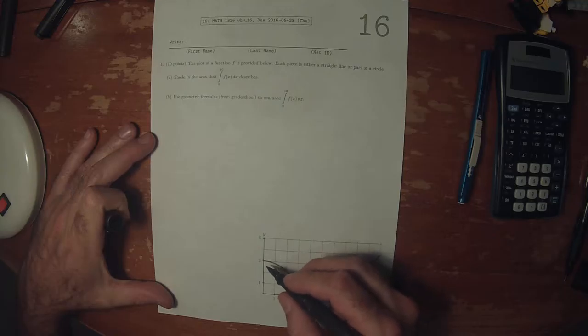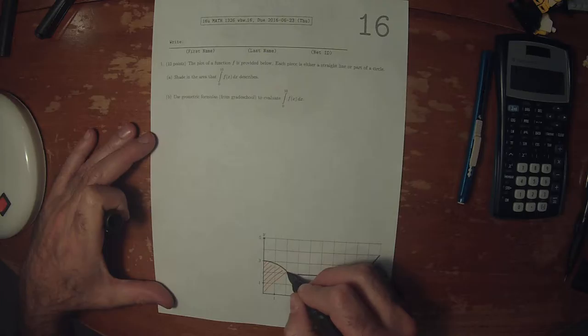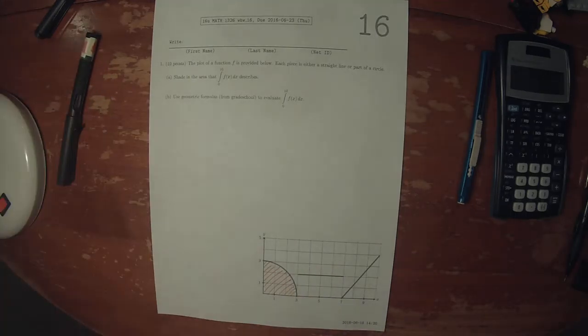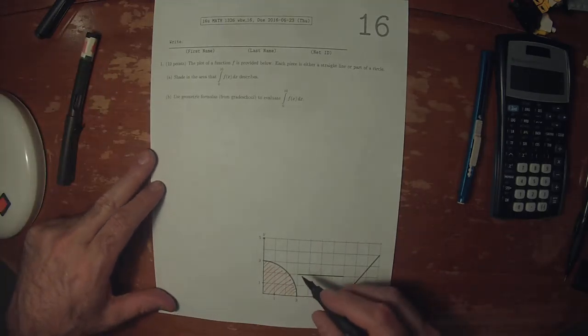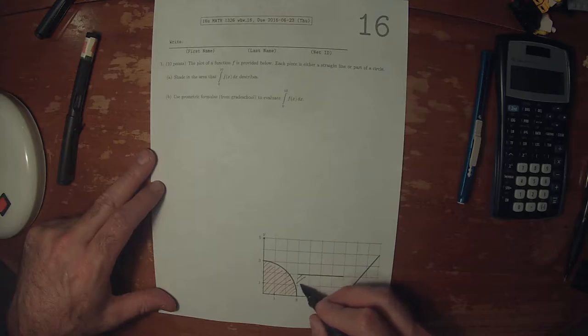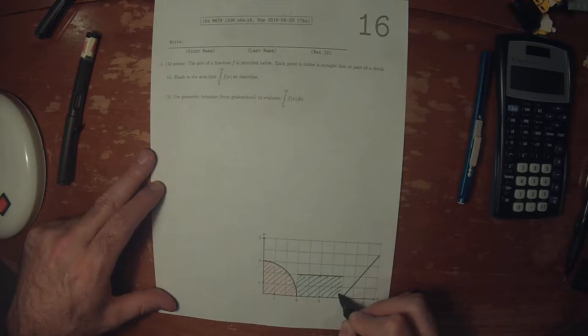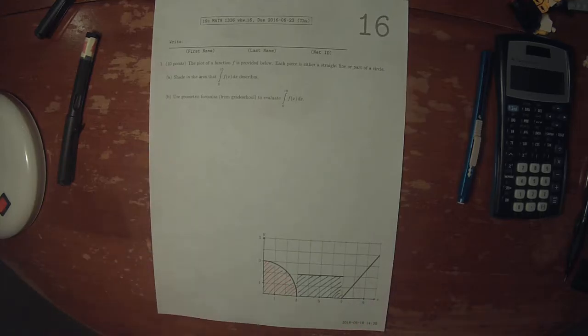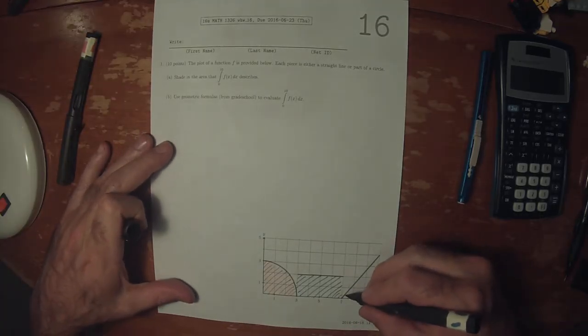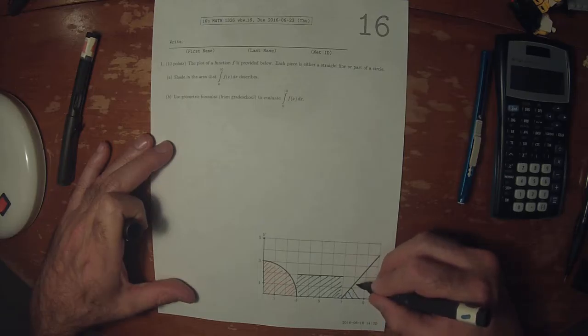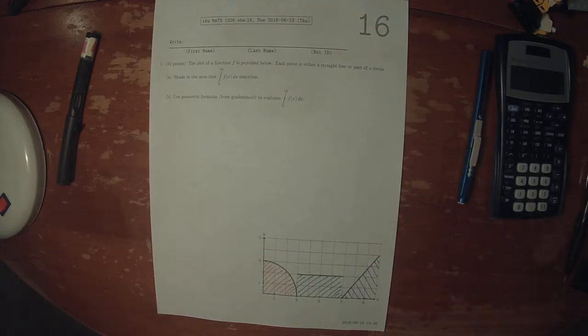So there are three distinct areas. This one, which is part of a circle. This one, which is a rectangle. And this one, which is a triangle.